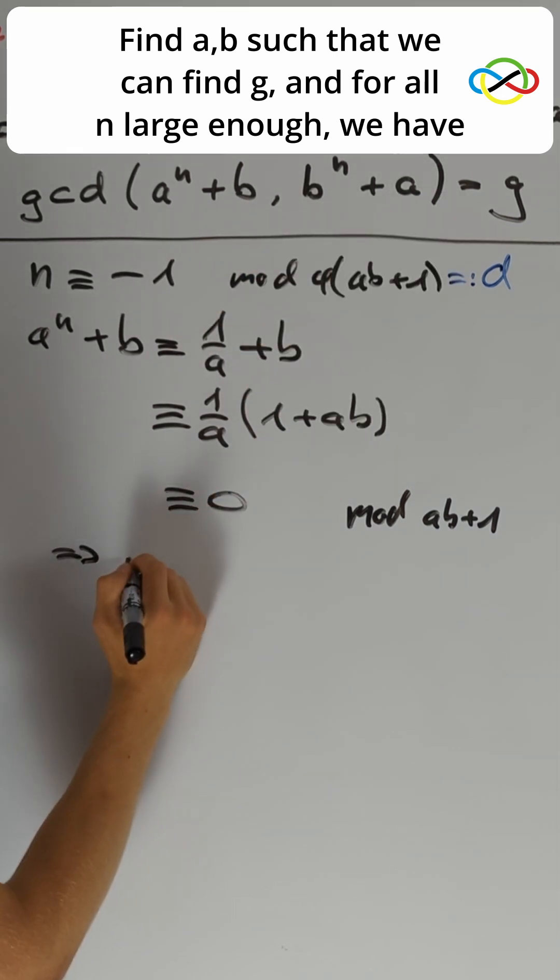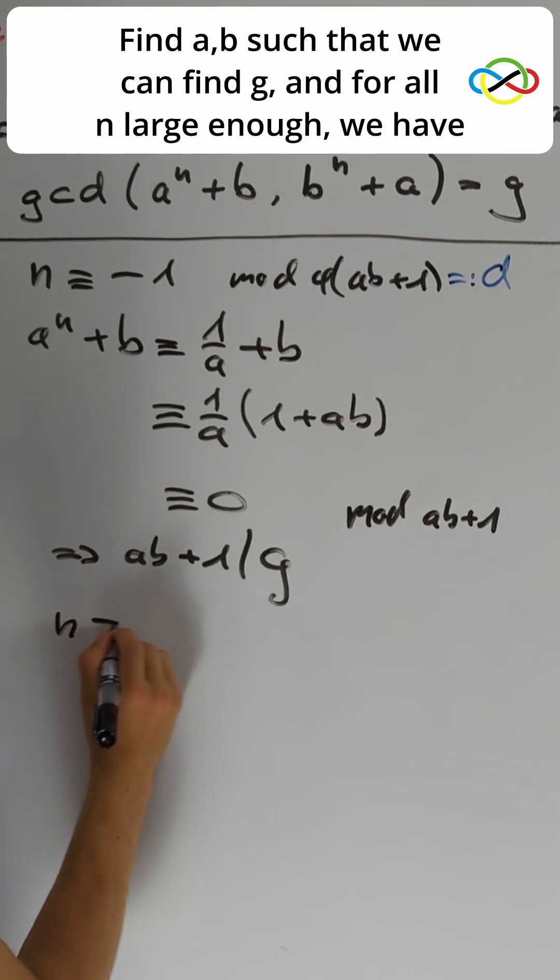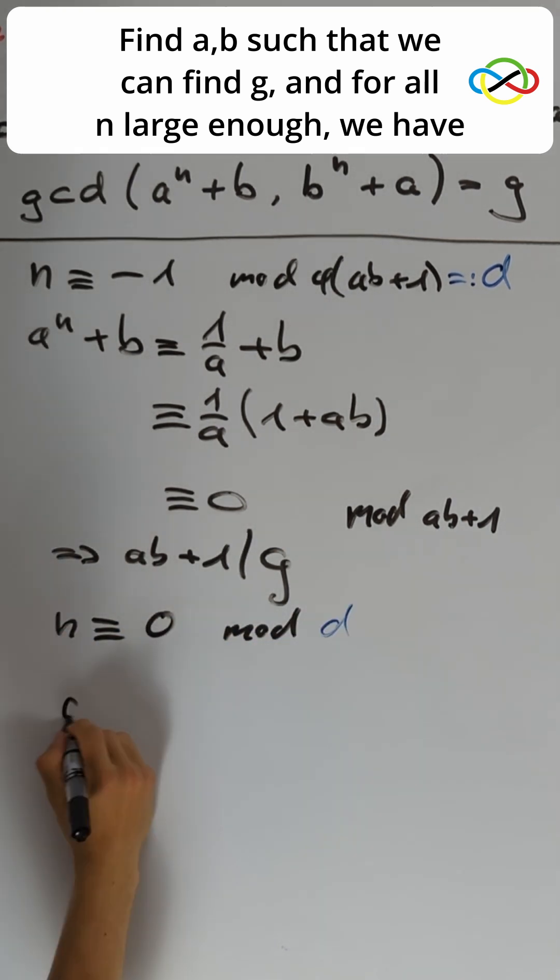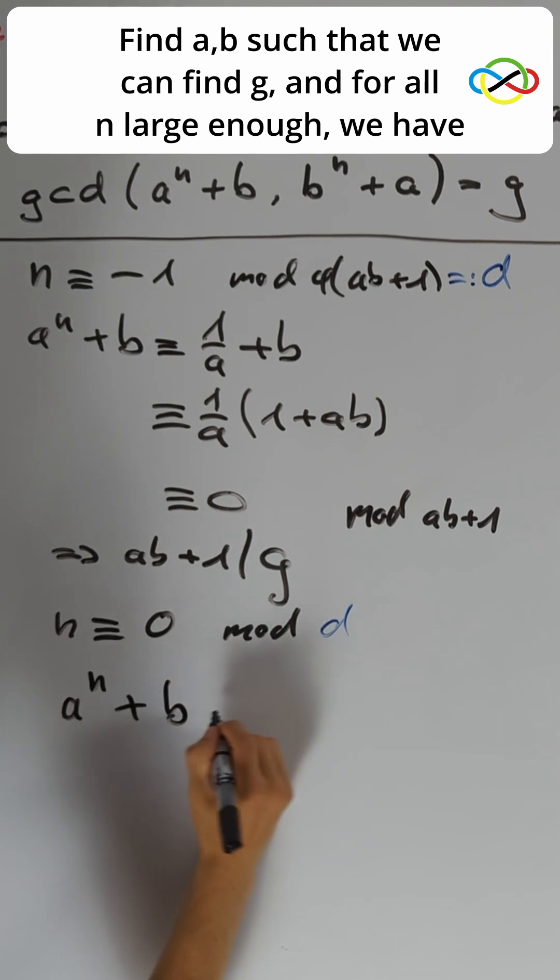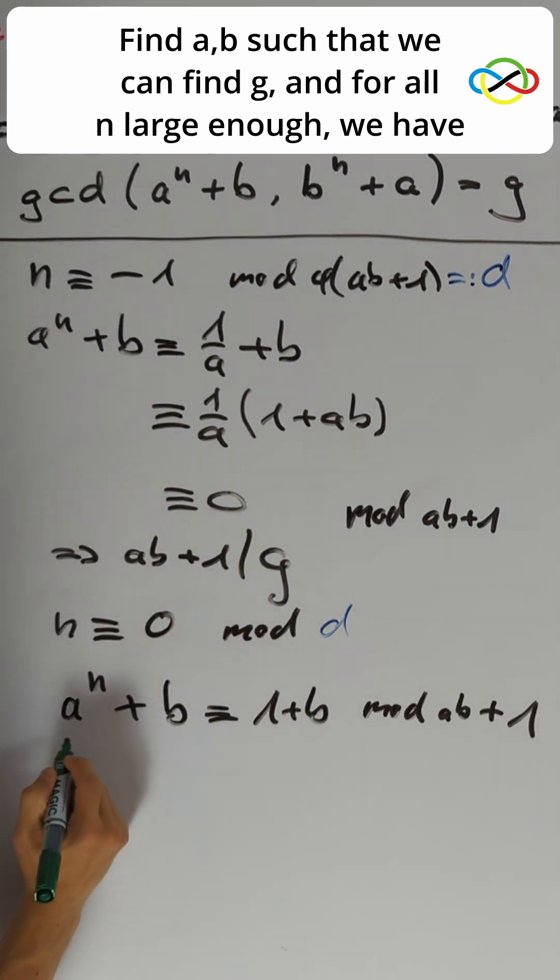We can conclude that ab+1 divides g. Taking n congruent to 0 modulo d, we get a^n + b is congruent to 1+b. For n large enough, the left hand side is divisible by g, so this is congruent to 0.